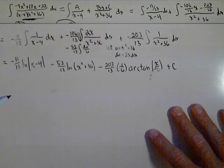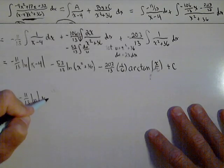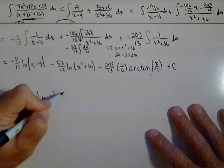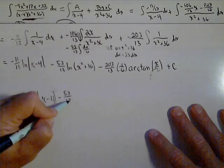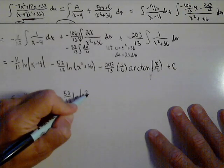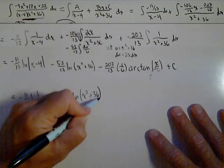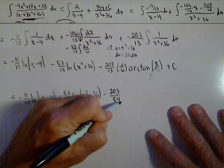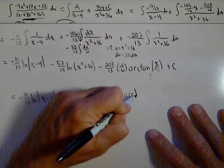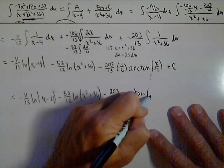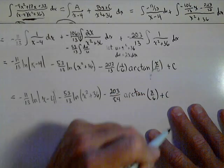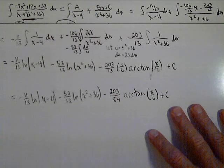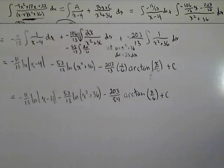Got a little bit of simplifying we can do there. So our answer is negative 11 thirteenths natural log of the absolute value of x minus 4 minus 53 over 13 ln of x squared plus 36 minus 203 over 78 arctan of x over 6 plus C. Not the prettiest antiderivative we've ever seen, but we were able to find it.